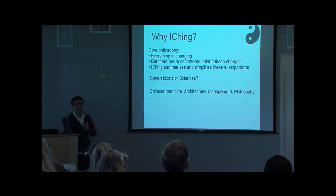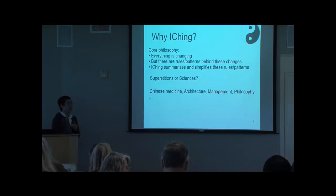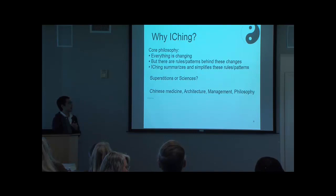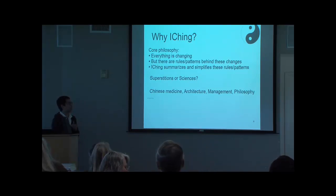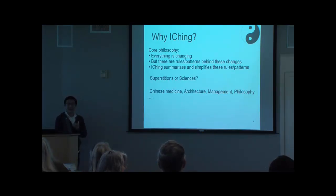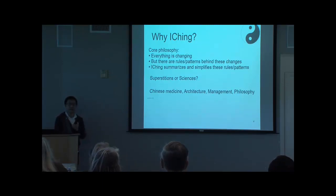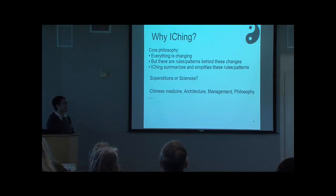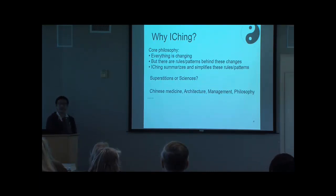So why am I interested in I Ching? Because I think the core philosophy of I Ching is very interesting. First, it says that everything is changing, but there are rules and patterns behind those changes, and I Ching is meant to summarize and simplify these rules and patterns. Does that sound familiar? Because we are all scientists, and these are also the goals of science. Yet in the scientific community, we still do not regard I Ching as a science — some regard it as superstition, especially in China.